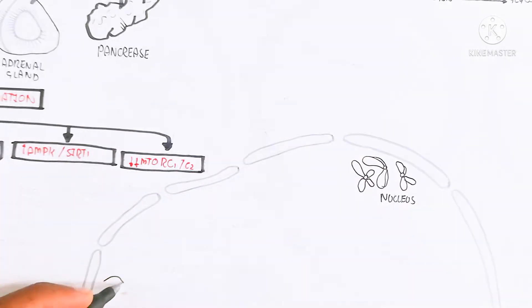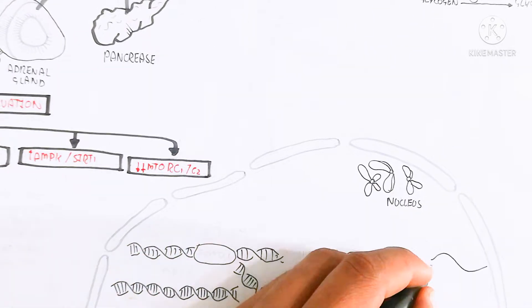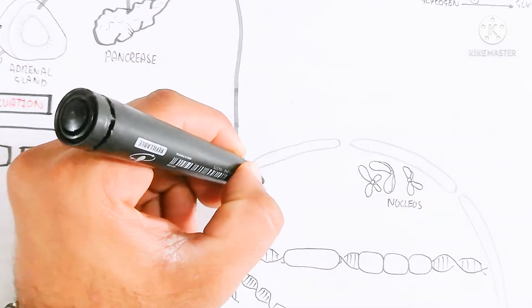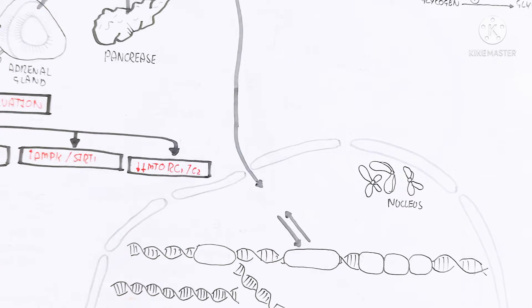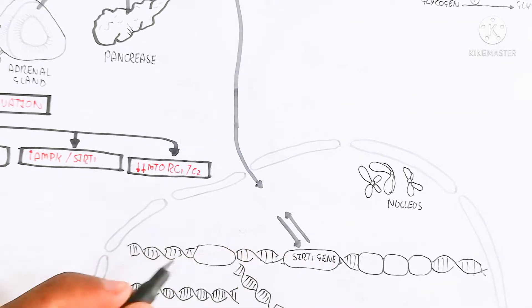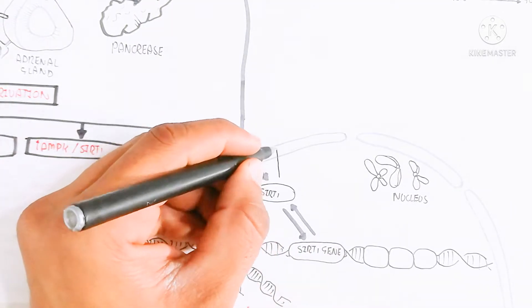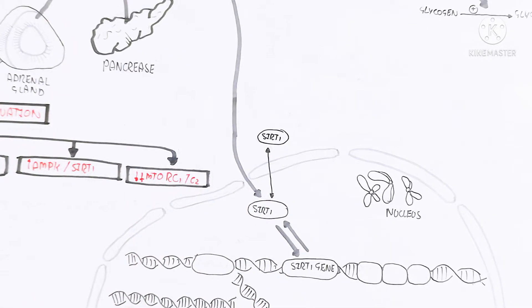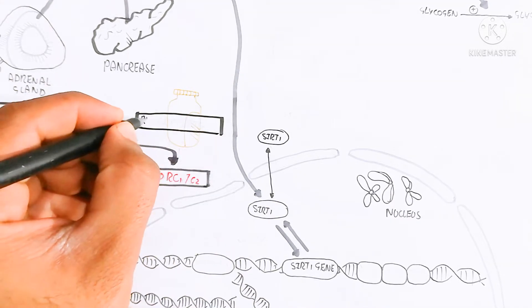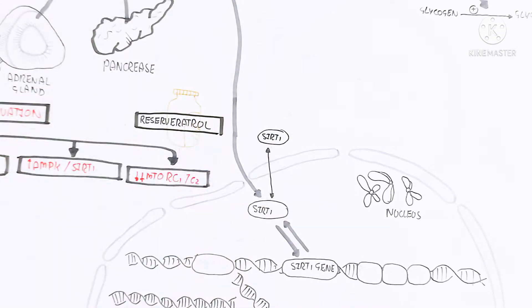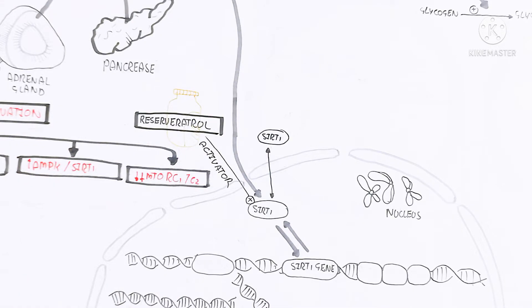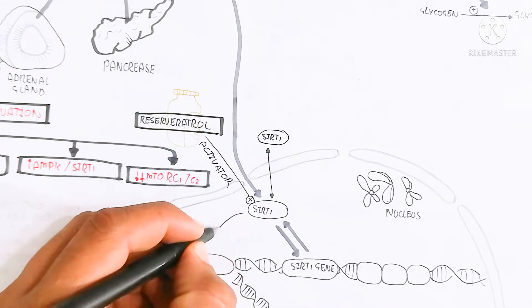NAD+ triggers the sirtuin-1 gene. The nucleus contains chromosomes composed of histone protein (60%) and DNA (40%). The DNA contains different genes — for example, the sirtuin gene — which is activated through NAD+ via the AMPK pathway. The sirtuin gene is activated and acts as a promoter for certain other genes.